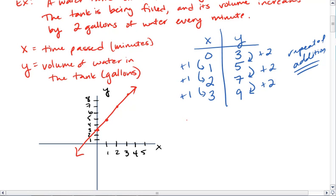We can even look at the equation where y equals... We know we're starting with 3 gallons and we repeatedly add 2 gallons every minute. So y equals 2x plus 3. These are the 3 ways that we can look at this equation.